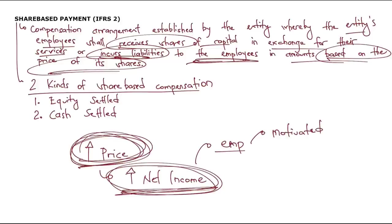In equity-settled share-based compensation, the entity issues equity instruments — which could be shares, share options, or preference shares — in consideration for services received. The most common example of equity-settled compensation is the share option, so our discussion today will focus on share options.